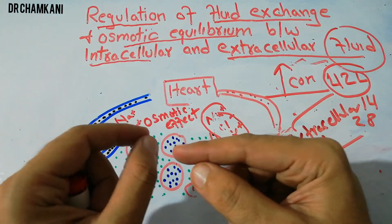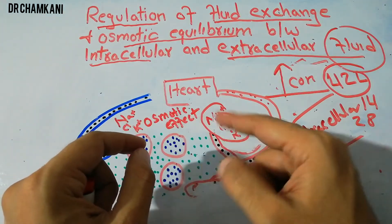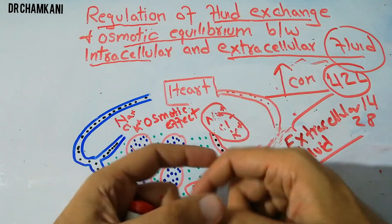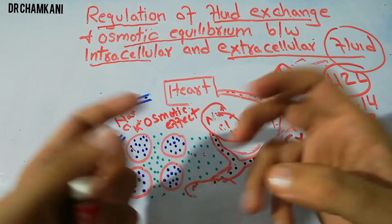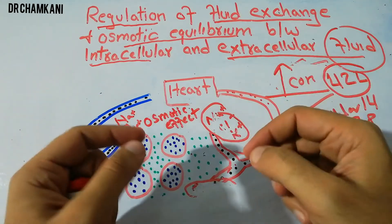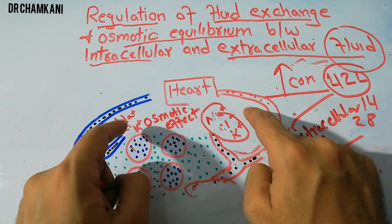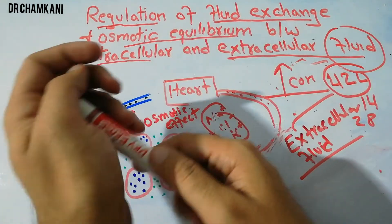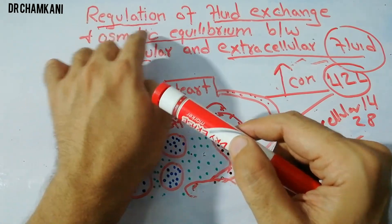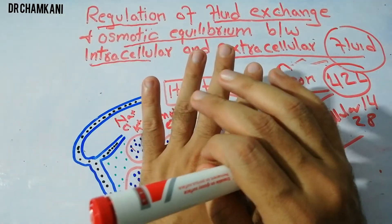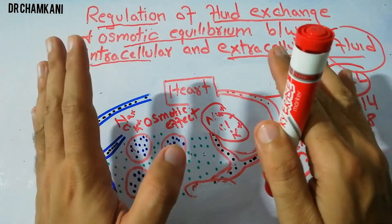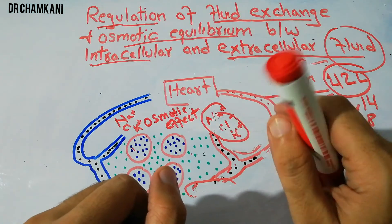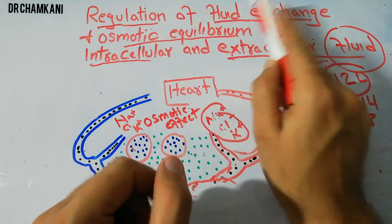If there is any abnormality in these forces, or if there is any increase or decrease in the amount of fluid or in the number of electrolytes, then these forces will get disturbed and this regulation and osmotic equilibrium will get disturbed, and the body will not be able to perform under optimum conditions. That's all about the regulation of fluid exchange.